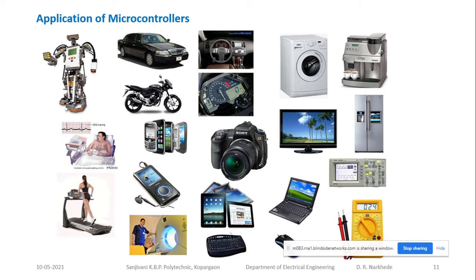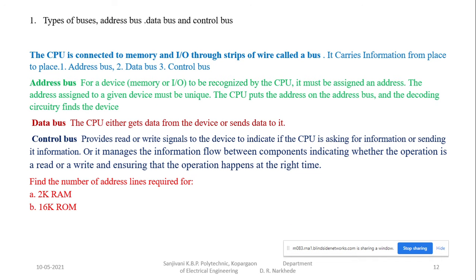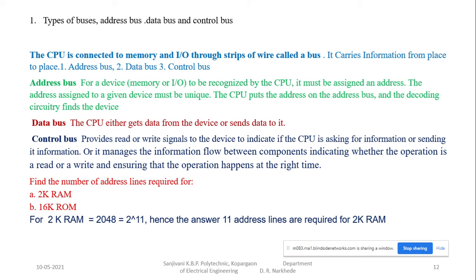In the previous session we also discussed the various types of buses: what is the address bus, what is the data bus, what is the control bus. We also need to find out how to calculate the number of address lines required. For example, if it is a 2K RAM, how many address bus lines are required?